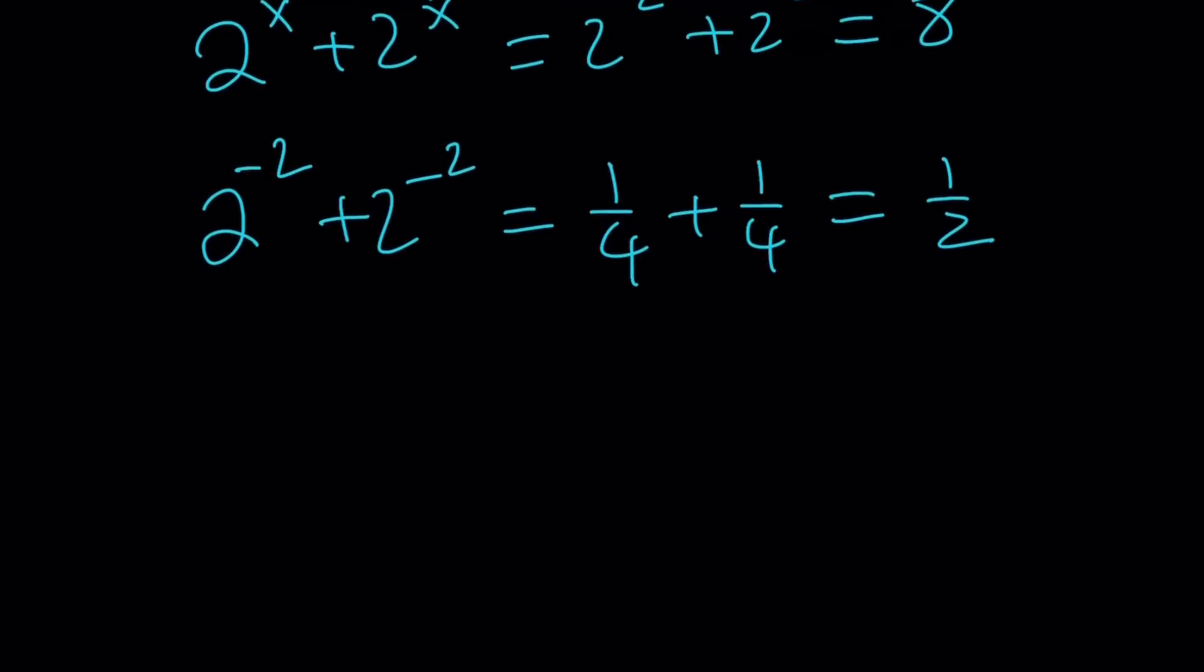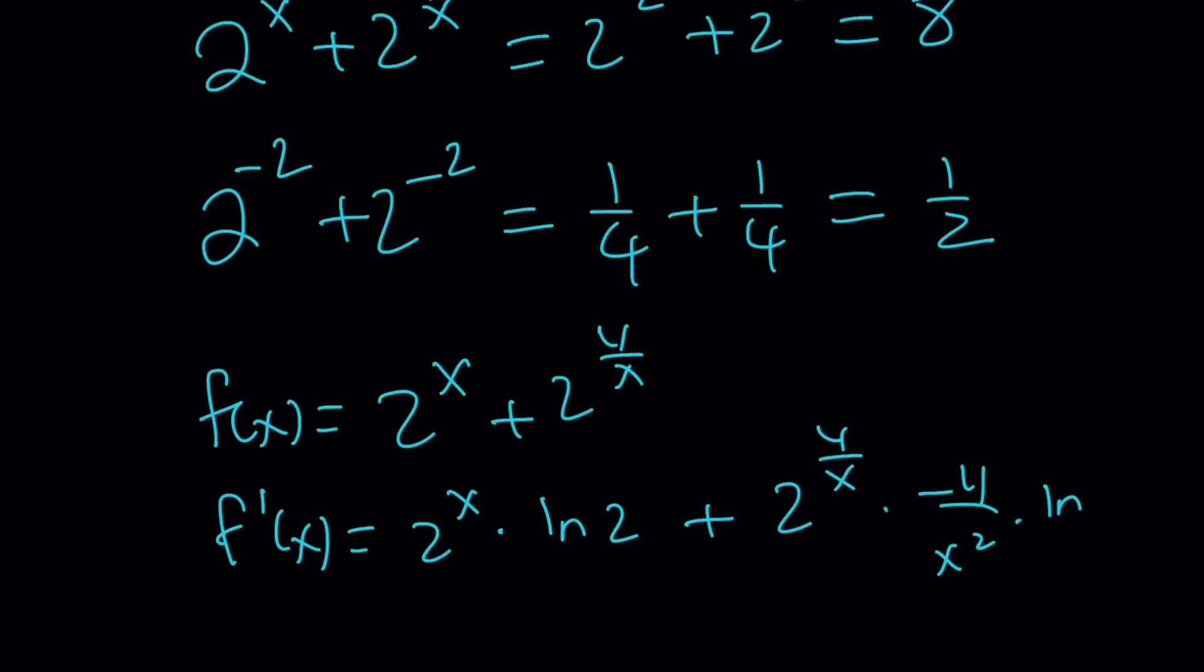So let's go ahead and look at this from a calculus perspective real quick. So if you consider the function f of x equals 2 to the x plus 2 to the 4 over x, differentiate both sides. You're going to get 2 to the x times ln 2 plus 2 to the 4 over x times the derivative of 4 over x, which is negative 4 over x squared times ln 2. Obviously, we are going to set it equal to 0.